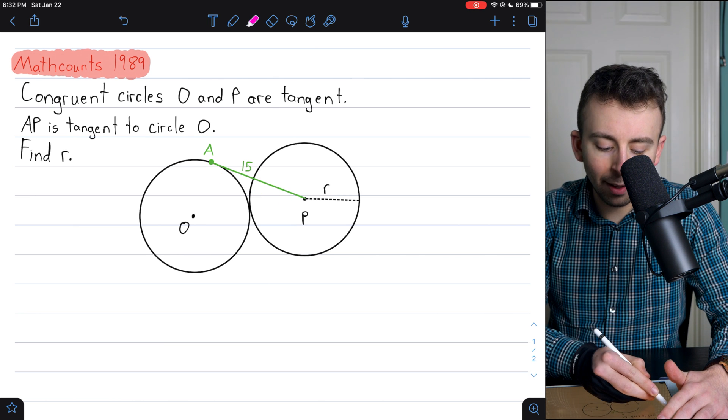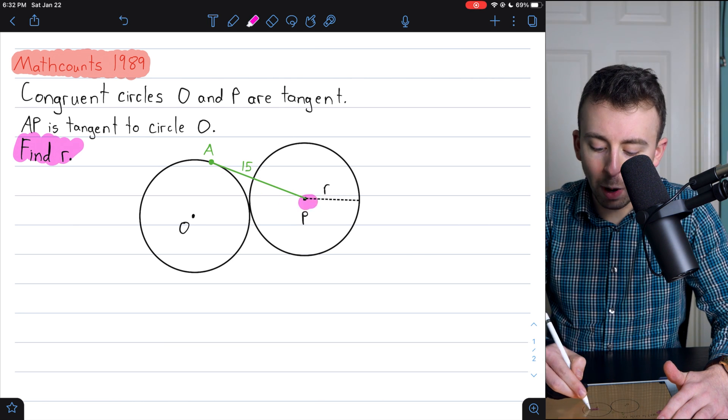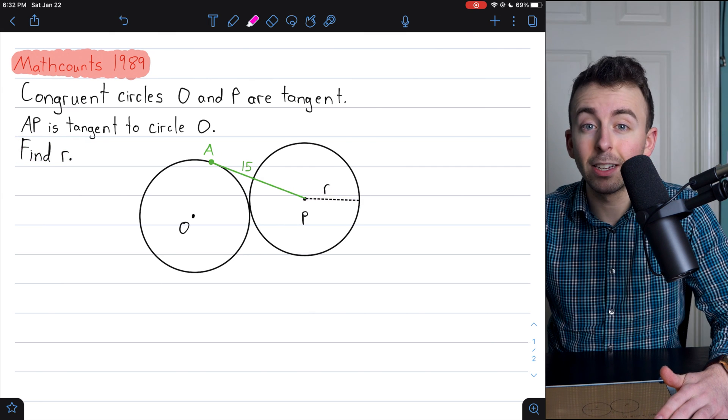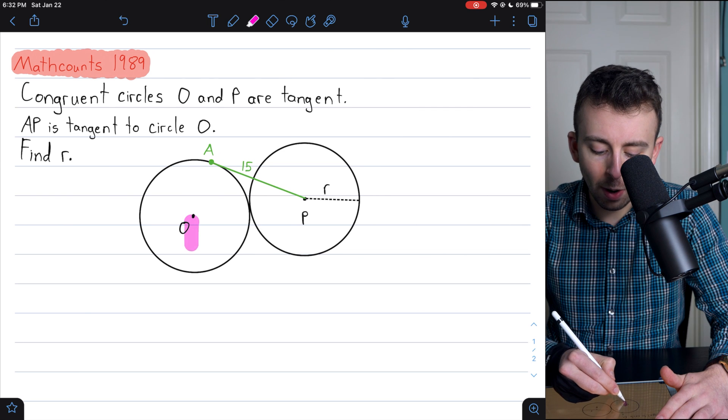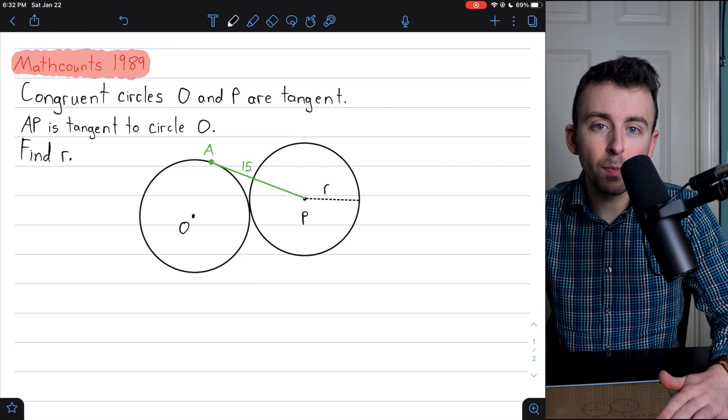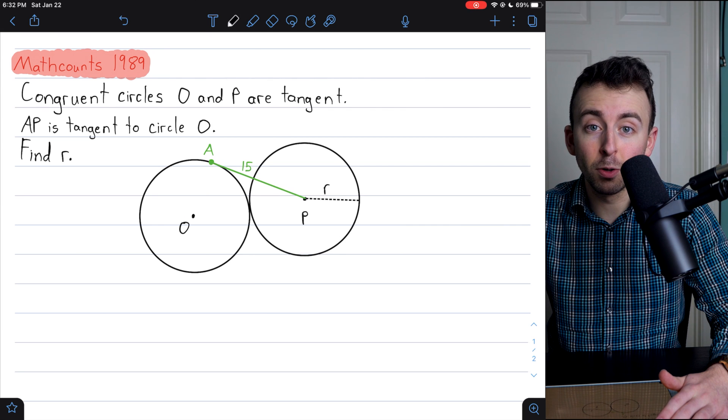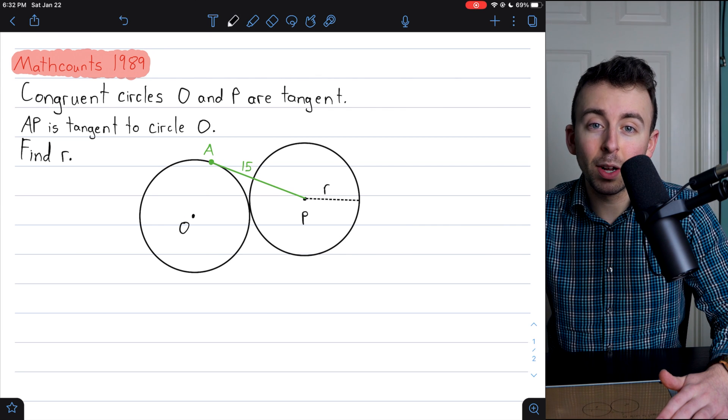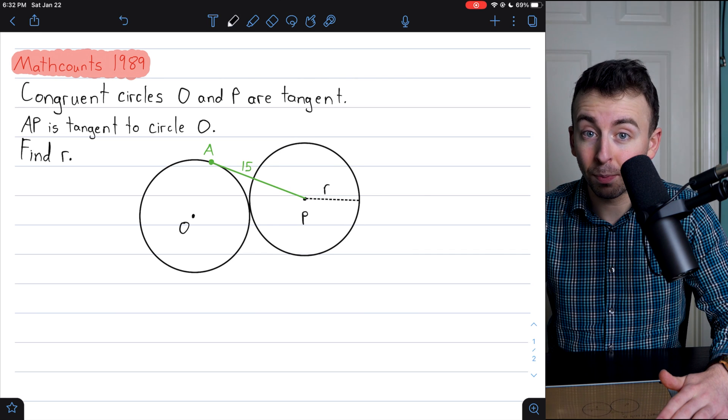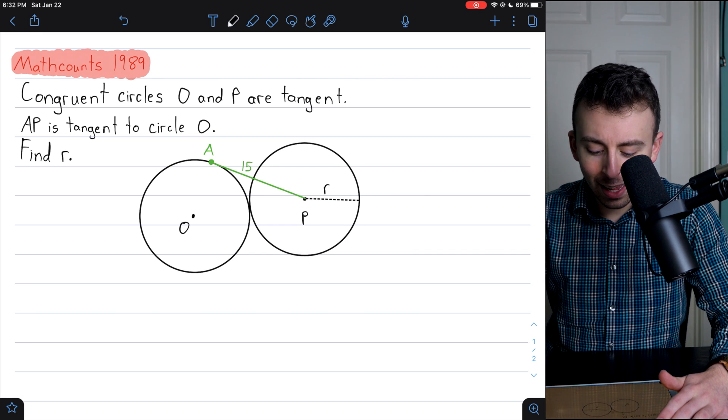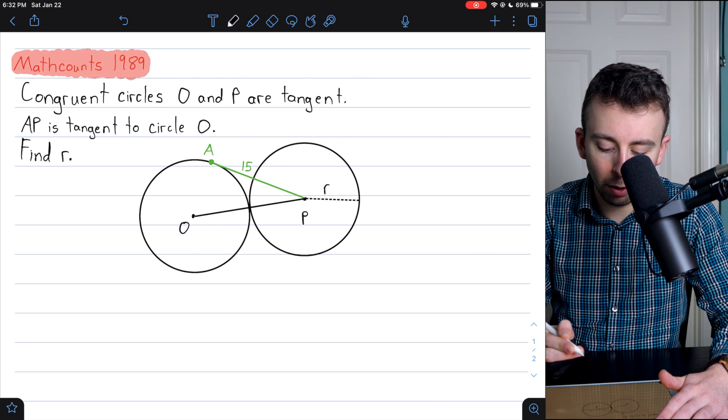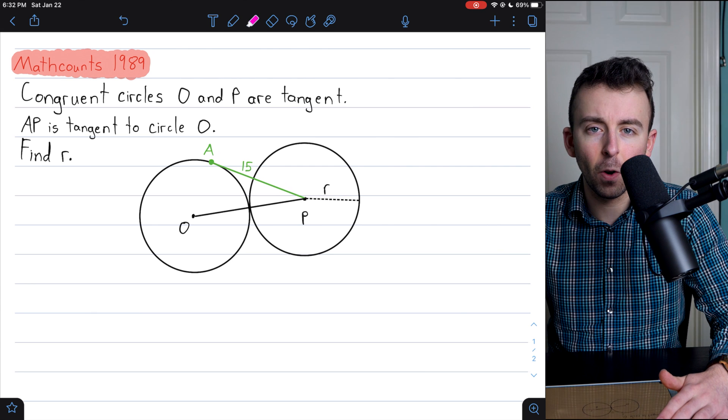Then we're asked to find R, the radius of circle P. Of course, since these two circles are congruent, circle O has the exact same radius. In a lot of geometry problems, the key is to introduce a triangle, and this one is no different. So let's start building up our triangle in what is probably the obvious way.